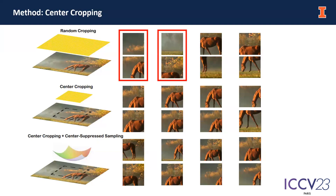To enable such a hallucination process, we need to put constraints on the cropping process. Instead of using random cropping, we use center cropping that applies random cropping in the center boxes of the images. Additionally, we introduce center suppressed assemblies to guarantee sufficient variance and avoid overconfidence modules.